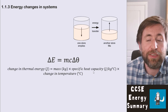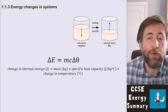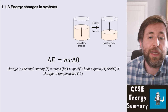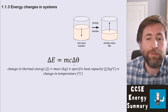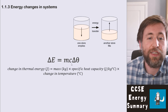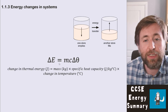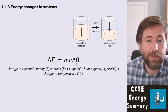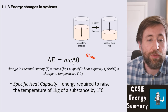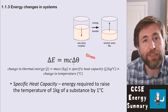Specific heat capacity is in joules per kilogram per degree Celsius, multiplied by a temperature change. That's what the little triangle (delta) and the little theta mean together — temperature change. Change in thermal energy: delta E. Change in temperature: delta theta. This formula is given to you on a formula sheet.